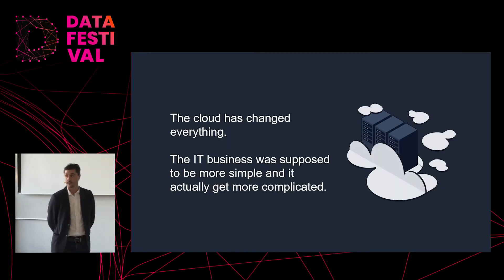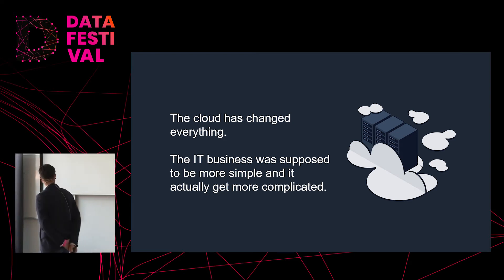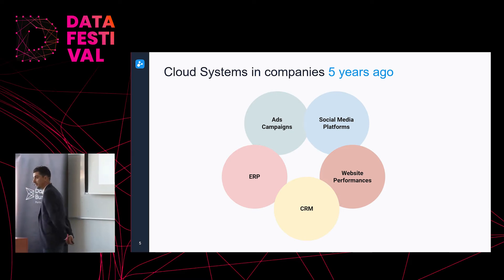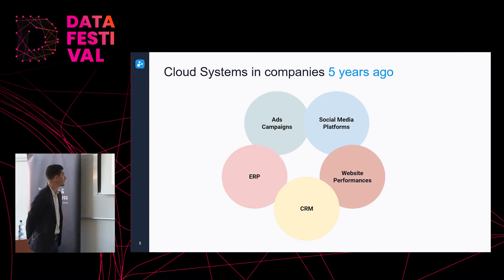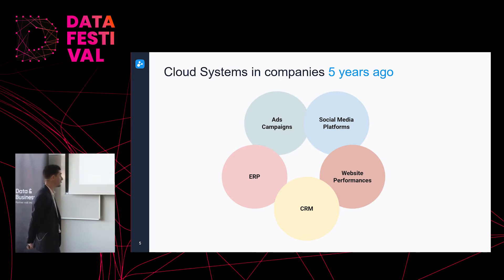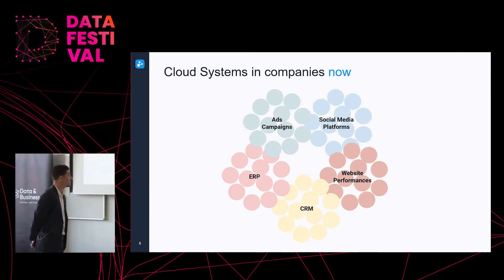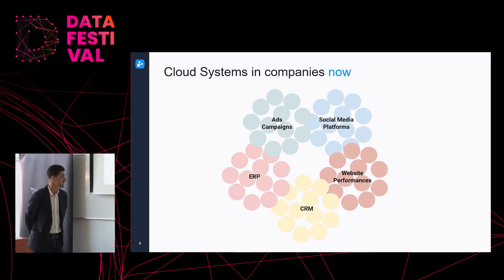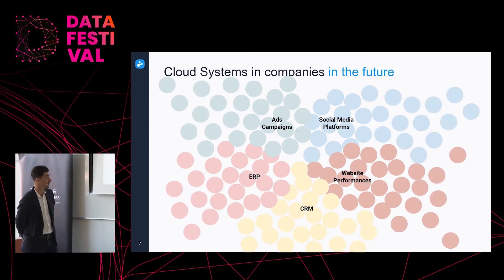The cloud has changed everything. The IT business was supposed to be more simple, more accessible, but it actually got way more complicated. Five years ago, companies used to have around five main systems — the CRM, social media platform, website performance tools. But today, all those different bubbles represent the tools and cloud services that are now accessible and generate data you need to access. And this is nothing compared to what it's going to be.